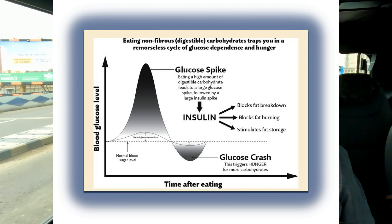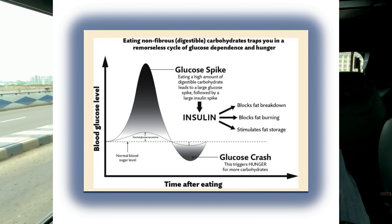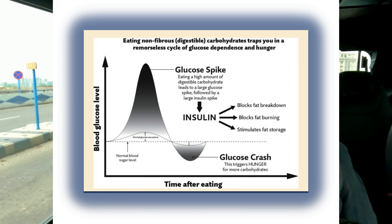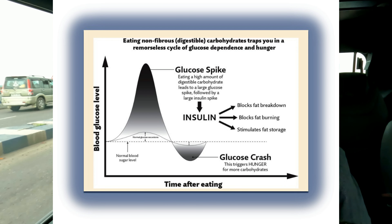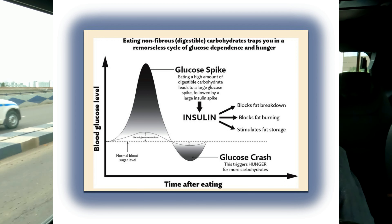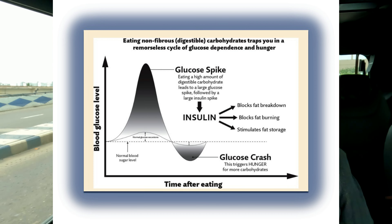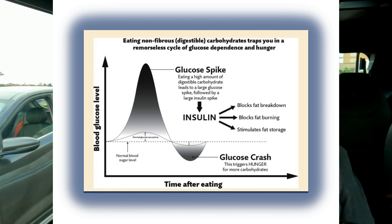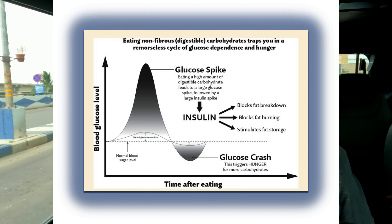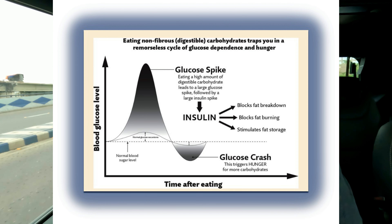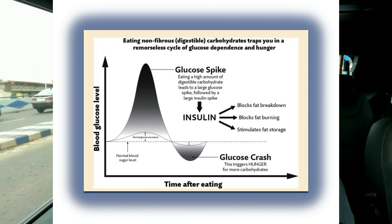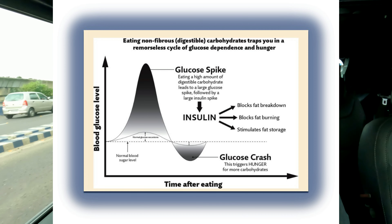Now among the macronutrients, the proteins are the building blocks of our body. Proteins consist of amino acids. Not only are proteins present in the muscle, but they form a part and parcel of each and every cell of the human body. Now these amino acids, quite a few of them are known as essential amino acids. Why are they called essential? Because the body cannot manufacture them on its own and they have to be taken from the food that we eat.